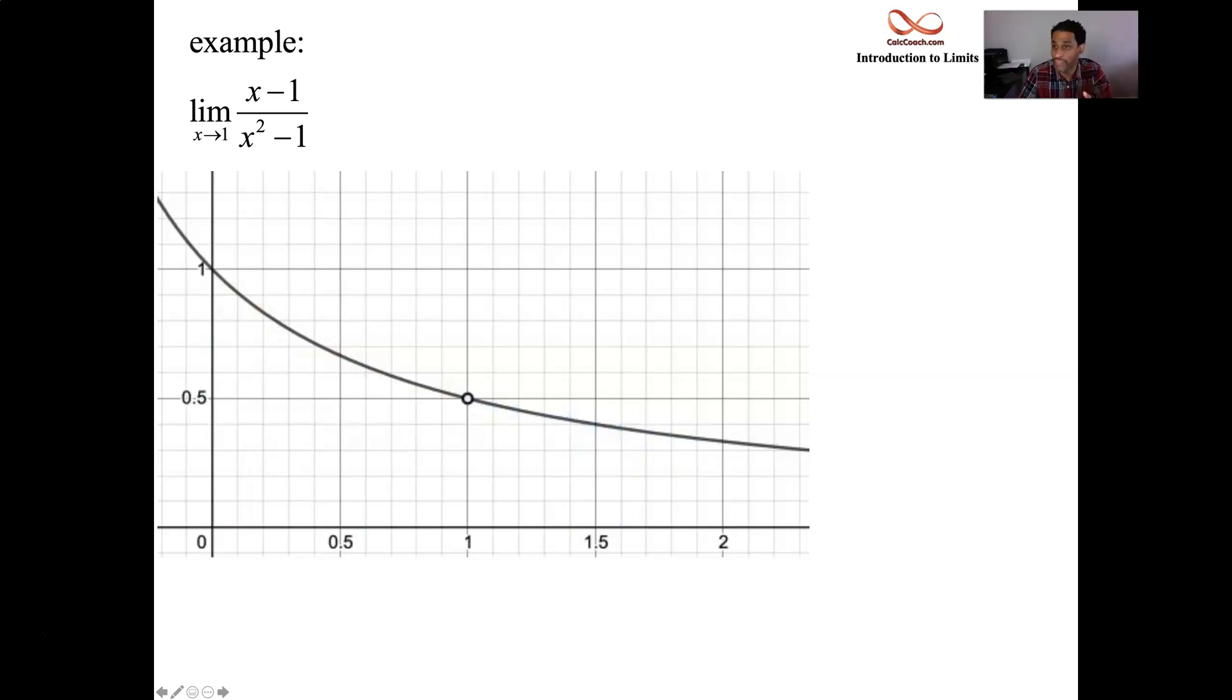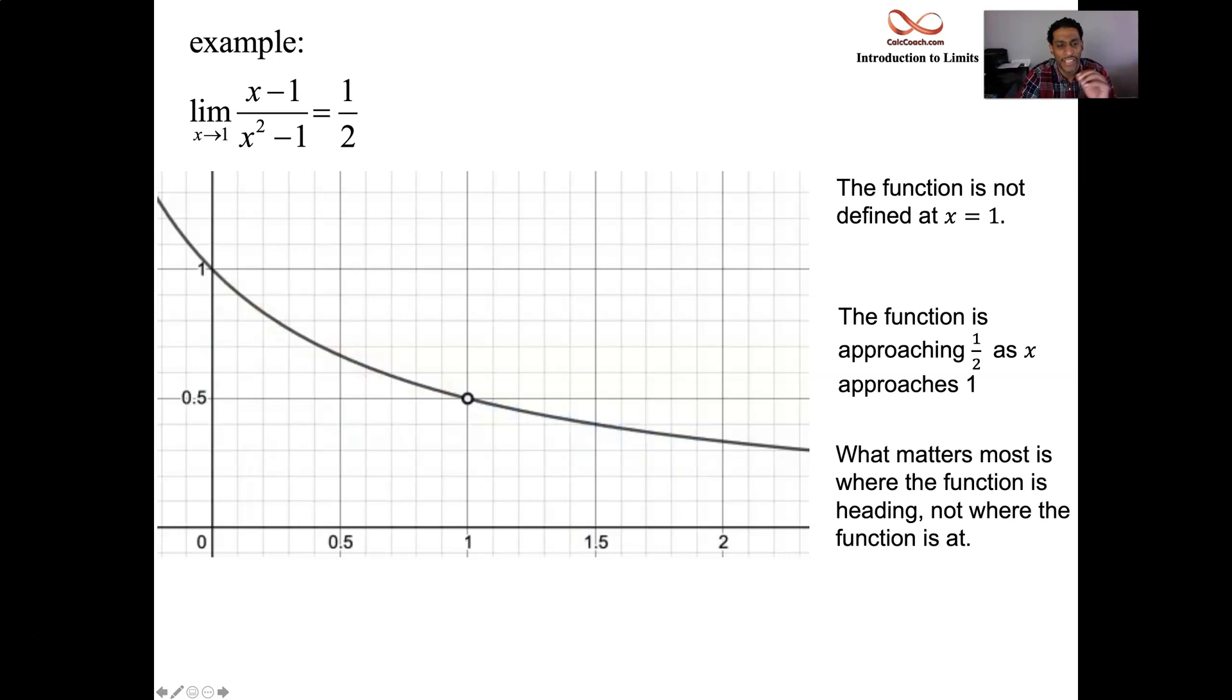But when you're at 1, the function doesn't even exist. There is a hole. The function is not defined at x equals 1, but the function is approaching a half as x approaches 1. This value of this limit is a half. It doesn't really matter what the actual function value is at the x equals a. What matters is where the function is approaching.